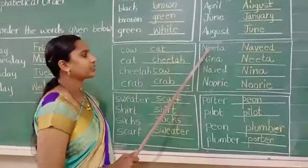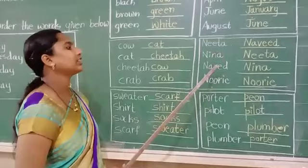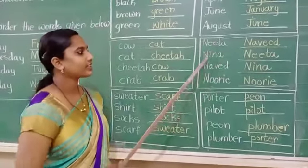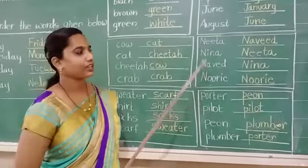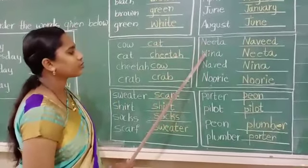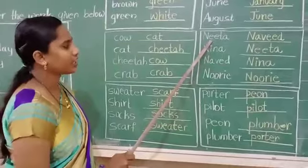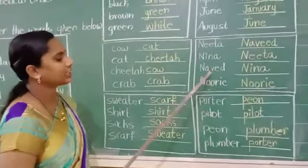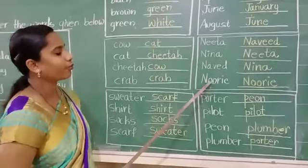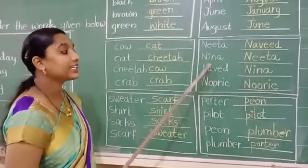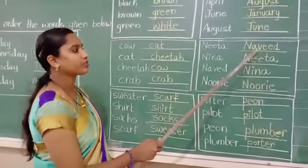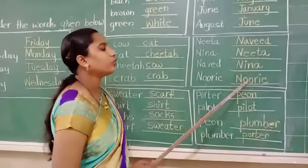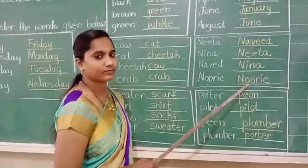Next one is Neeta, Neena, Navit and Nuri. These are names. Okay? So here also first letter is the same. So we should see the second letter — that is E, I, A, O. Which letter will come first? A. Very good. So we should write Navit, Neeta, Neena, Nuri.